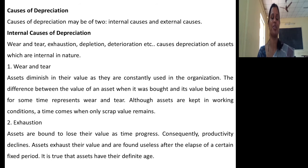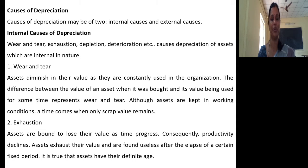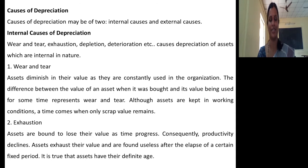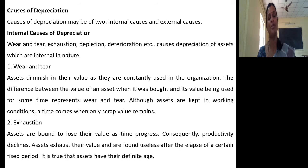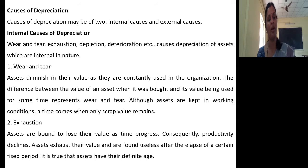What are the causes for depreciation? There are two important causes: internal causes and external causes. Internal causes include wear and tear, exhaustion, depletion, and deterioration. Regarding wear and tear, assets diminish in their value as they are constantly used in the organization. The difference between the value of an asset when it was bought and its value after being used for some time represents wear and tear.